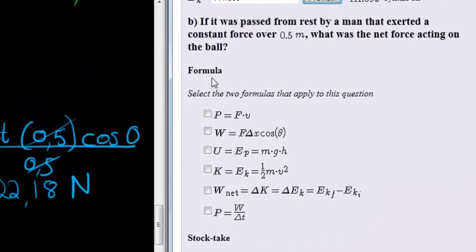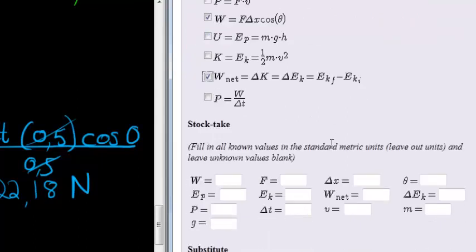In the second part, we use two formulas, and you can see they give us the opportunity to select two formulas. The one was that the net work done is equal to the net force times the change in displacement and cos. But in order, this is where we have F that we're trying to calculate. But in order to use this, we also needed to use the work-energy theorem that says that the net work done is equal to the change in kinetic energy.